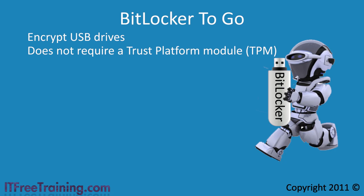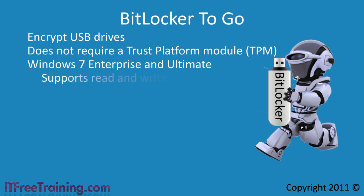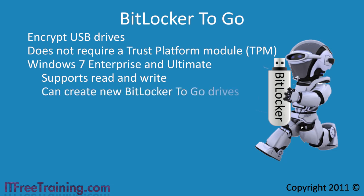In order to configure BitLocker To Go you need to be running Windows 7 Enterprise or Ultimate Edition. Either of these editions will allow you to read and write files to BitLocker To Go USB devices as well as configure new USB devices.